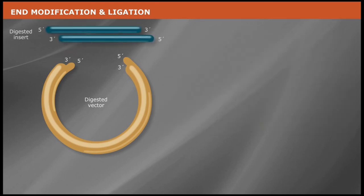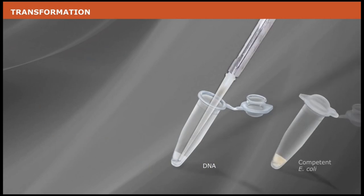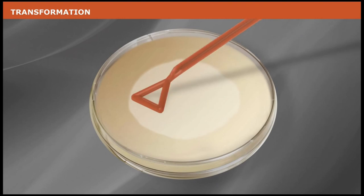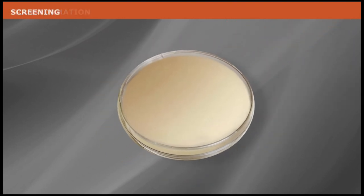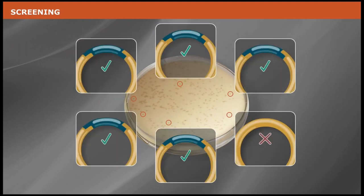Select a ligase to covalently join the vector and insert. Transform the recombinant plasmid into competent E. coli. Spread onto agar plates that contain the appropriate antibiotic for selection. Screen the resulting colonies for the gene or fragment of interest.